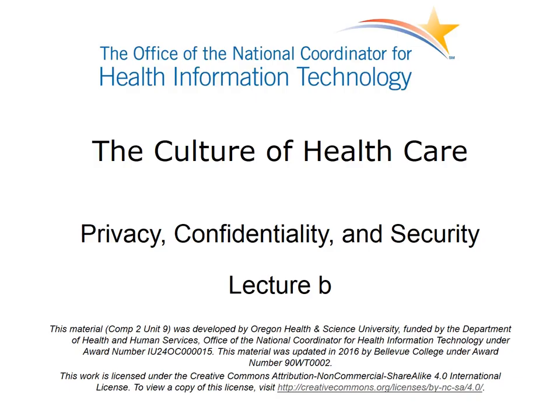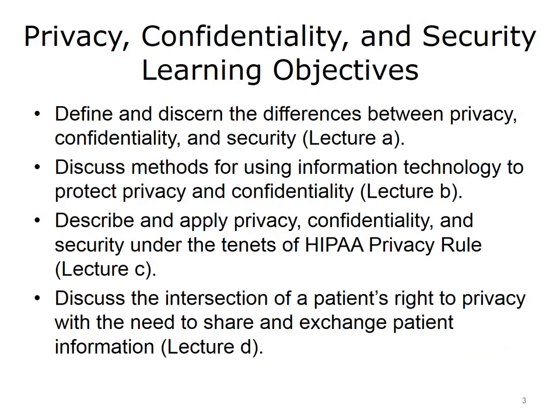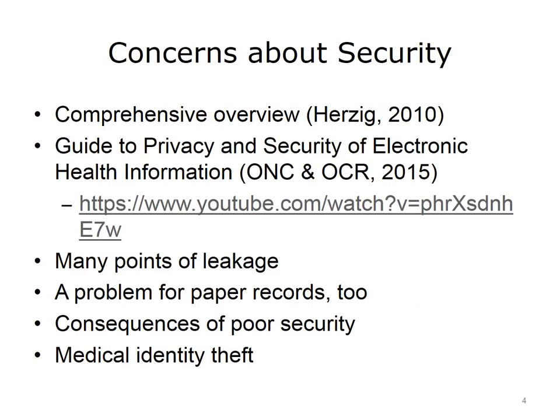It discusses how care is organized within a practice setting, privacy laws, and professional and ethical issues encountered in the workplace. The objectives for privacy, confidentiality, and security are to define and discern the differences between privacy, confidentiality, and security, discuss methods for using information technology to protect privacy and confidentiality, describe and apply privacy, confidentiality, and security under the tenets of the HIPAA security rule, and discuss the intersection of a patient's right to privacy with the need to share and exchange patient information.